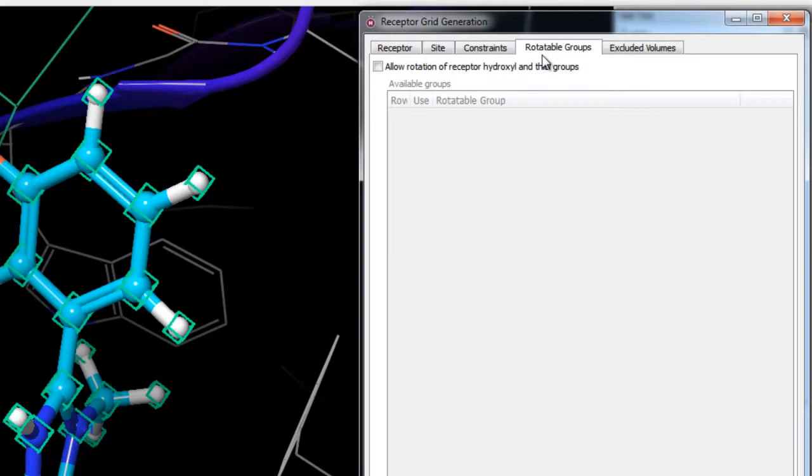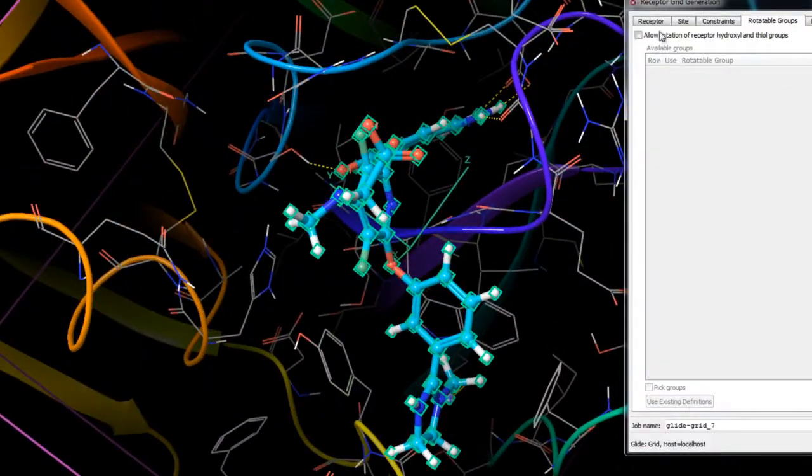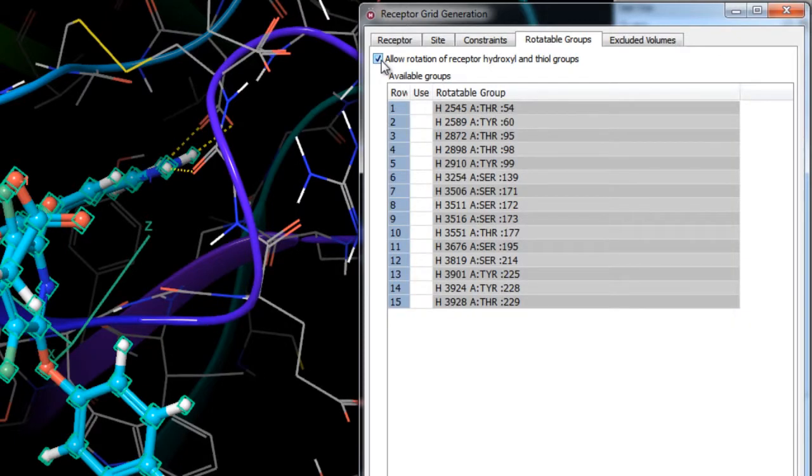The hydroxyl groups in residues such as serine, threonine, and tyrosine, and the thiol group in cysteine, can adopt different orientations with different ligands. In the rotatable groups tab, we have the option to allow such groups to adopt different orientations when ligands are docked to produce the most favorable interaction. Simply turn on the checkbox to allow rotation of these groups.